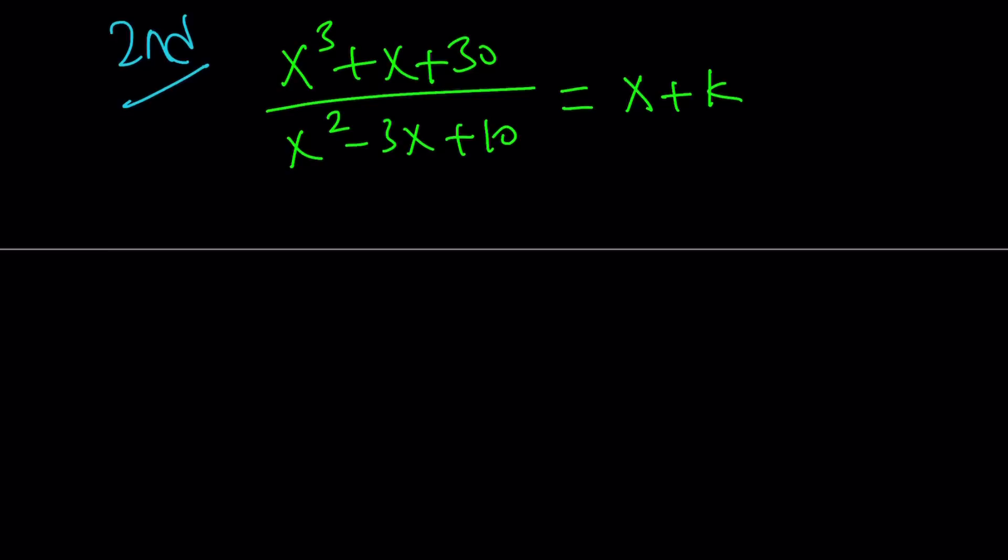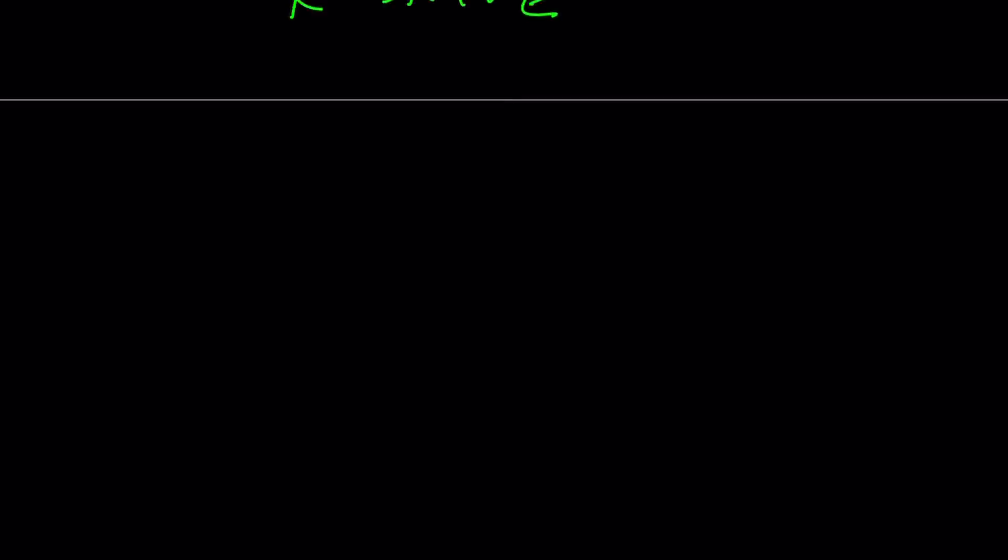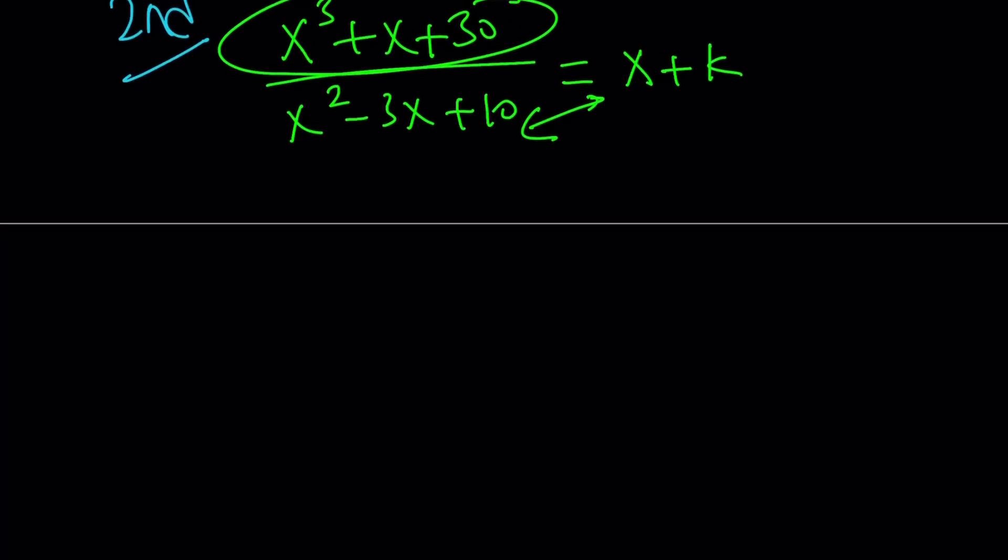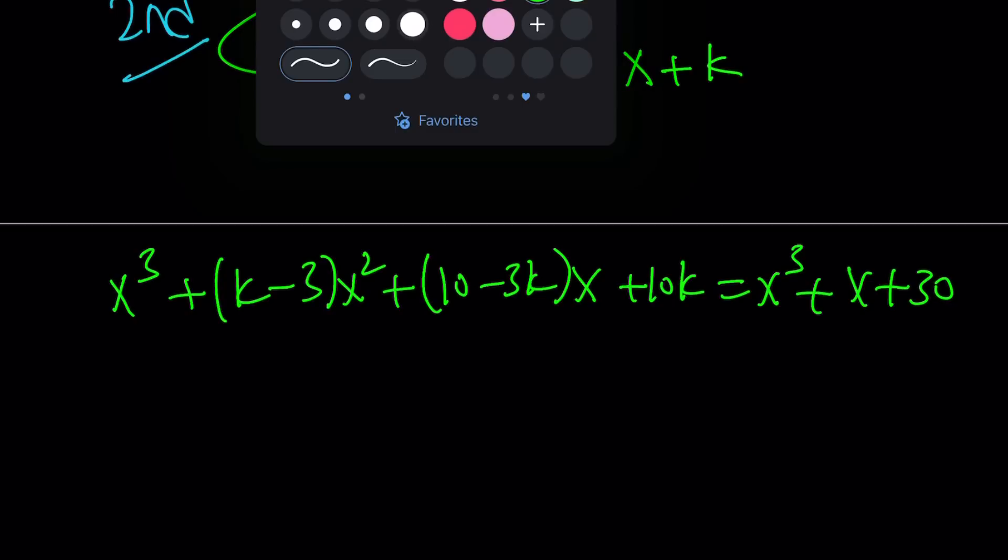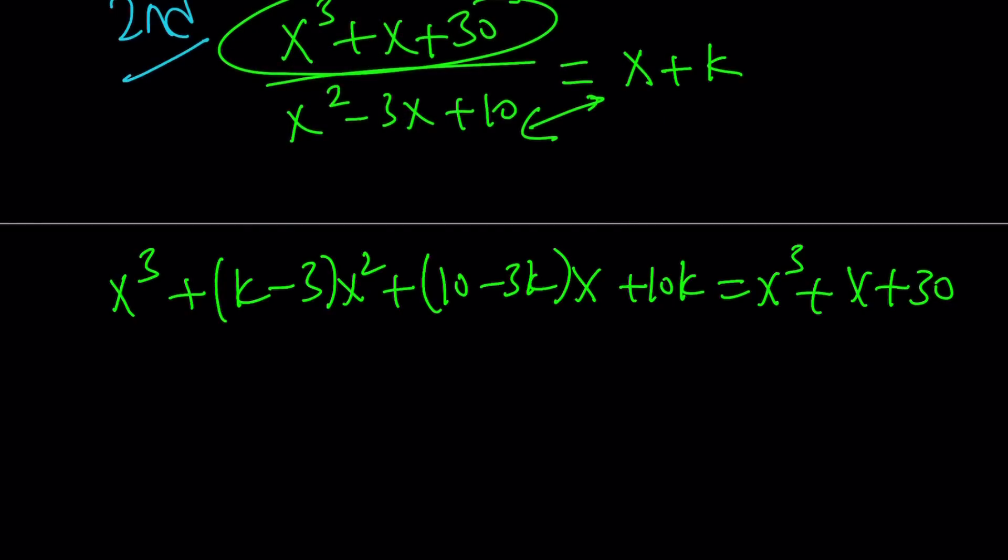Let's go ahead and multiply. And we're going to do cross multiplication, so this times this is going to equal that. But to save some trouble for you, let me go ahead and give it to you real quick. When we multiply those, we're going to get x cubed plus k minus 3x squared plus 10 minus 3kx plus 10k. And this is supposed to equal x cubed plus x plus 30, which is the numerator.